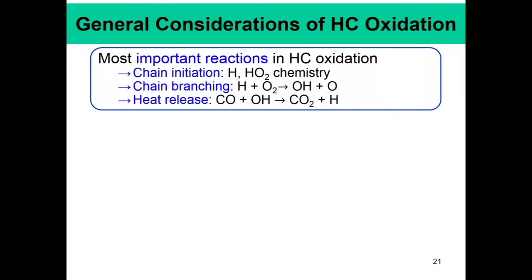The most important reactions in hydrocarbon oxidation are, of course, chain initiation — that is the formation of H and HO2. H is a very active radical and its formation is intrinsic and very important towards further propagation of the reaction, because these active radicals attack further incoming fuel molecules and oxygen. The most important reactions are H plus O2 going to OH plus O — the key chain branching step — and CO plus OH going to CO2 plus H, which is the key heat release step.